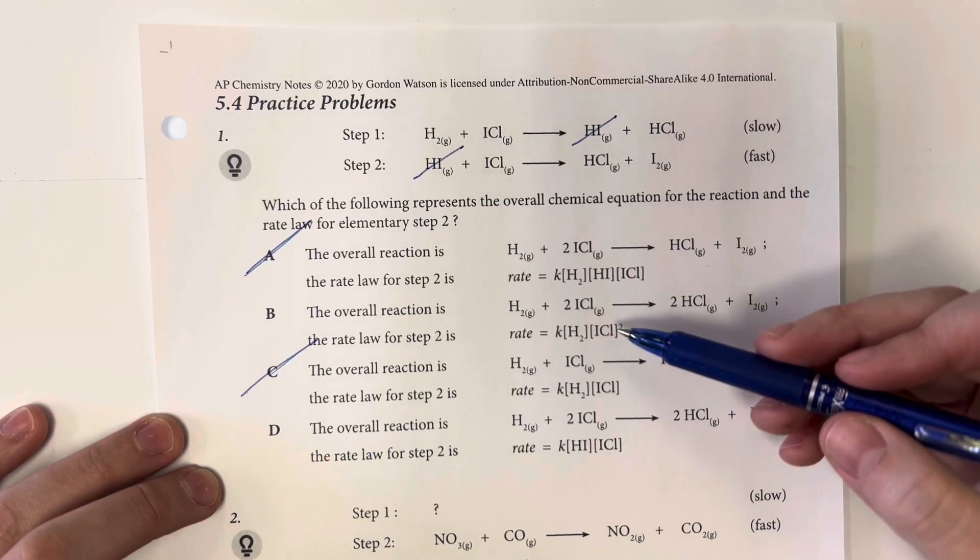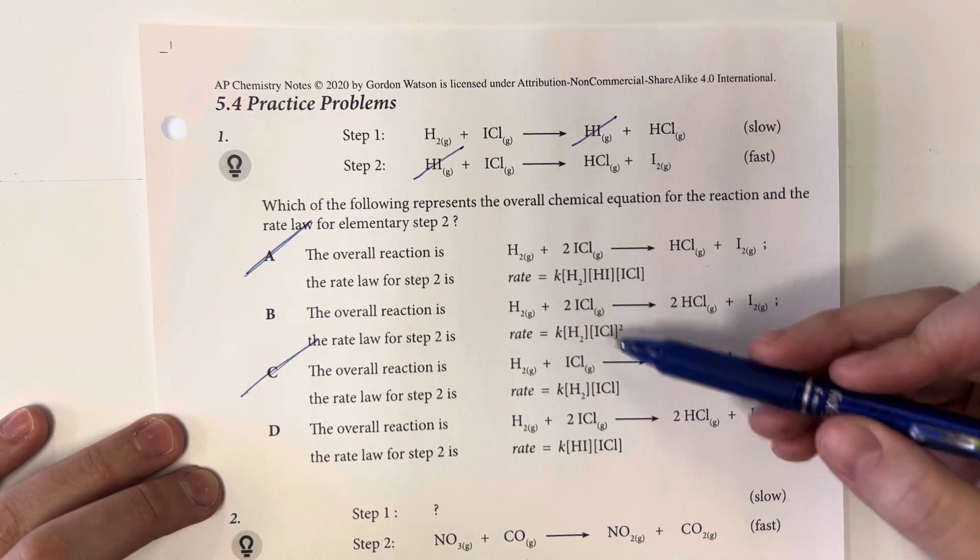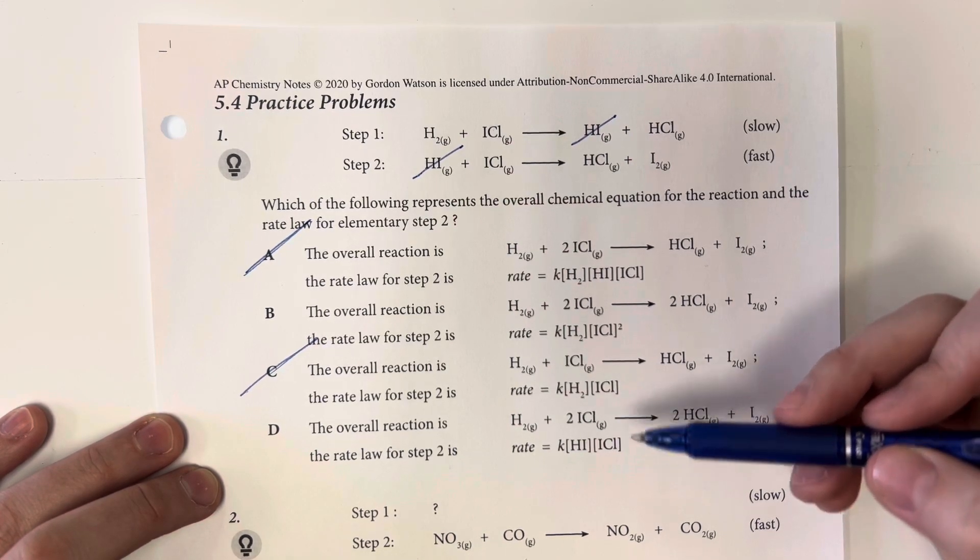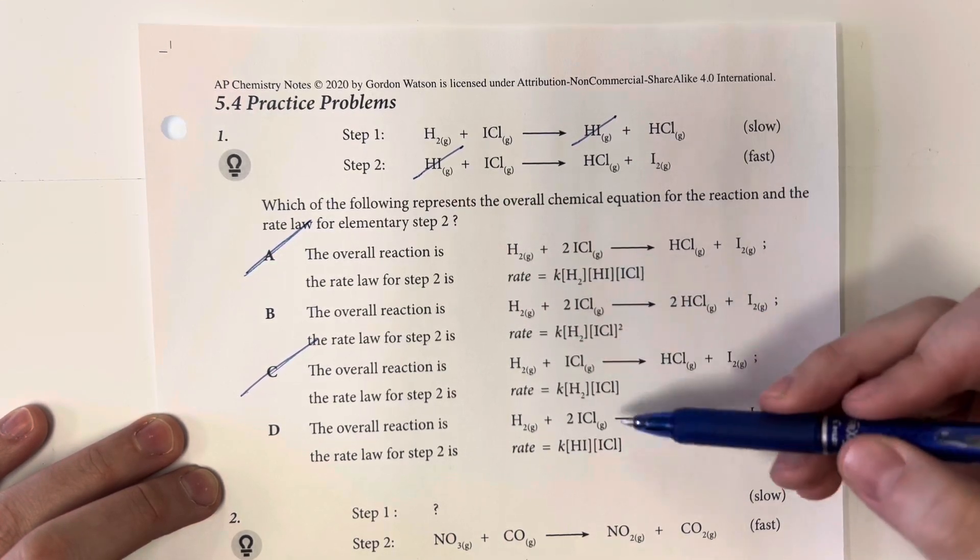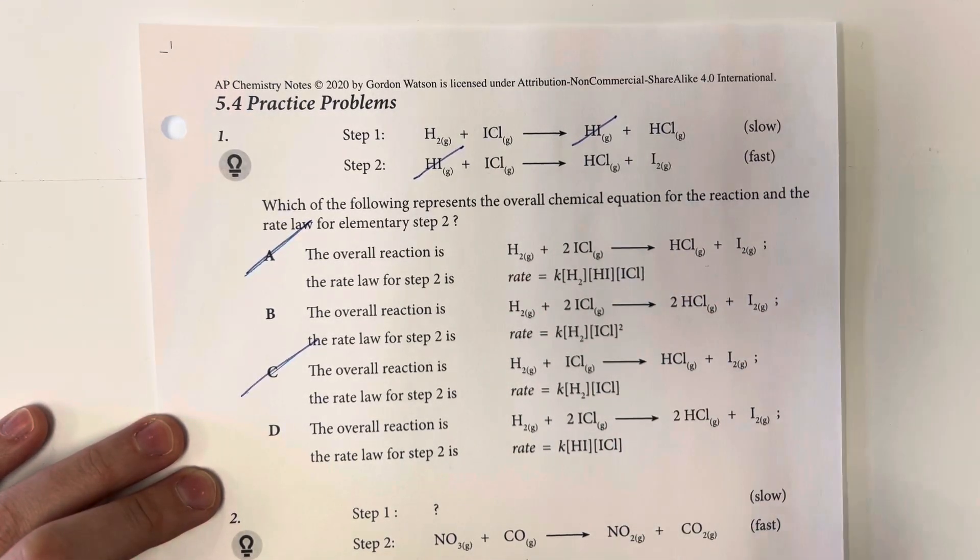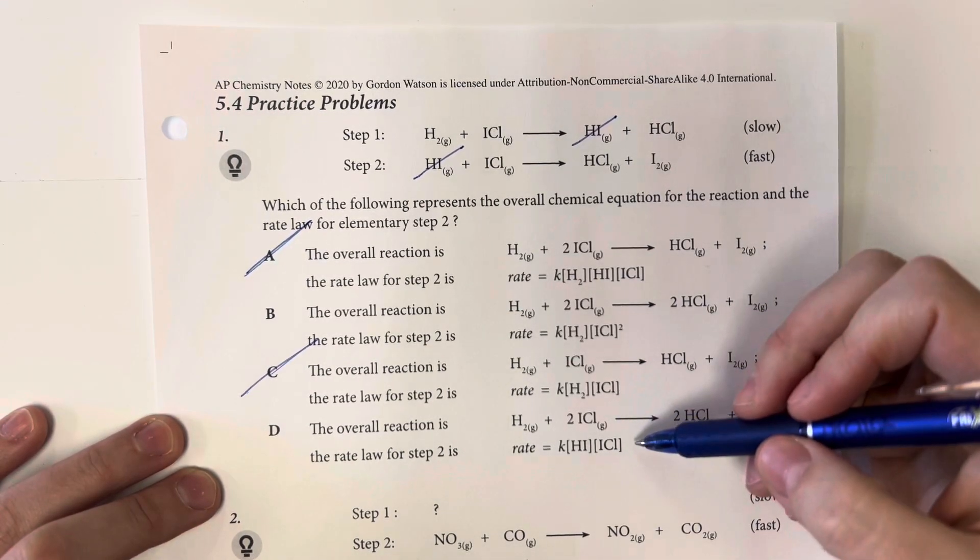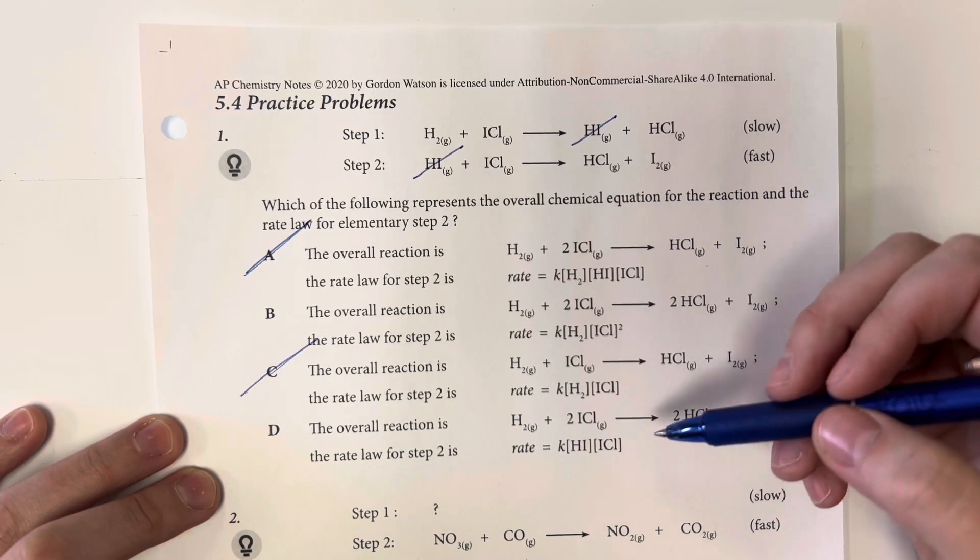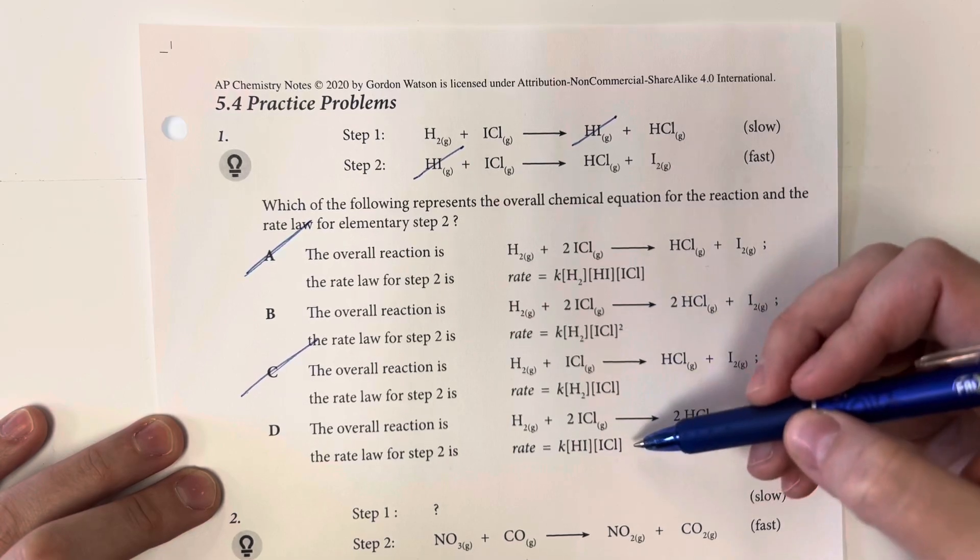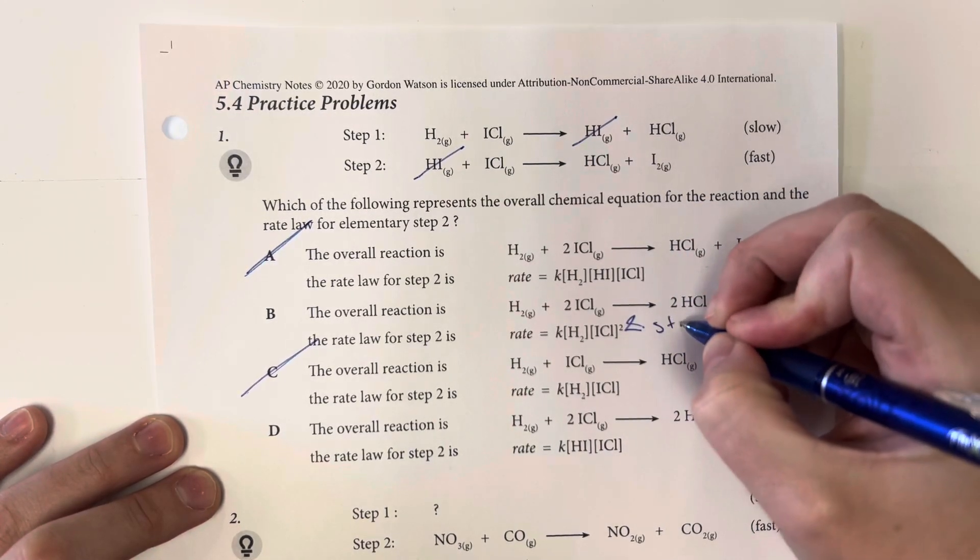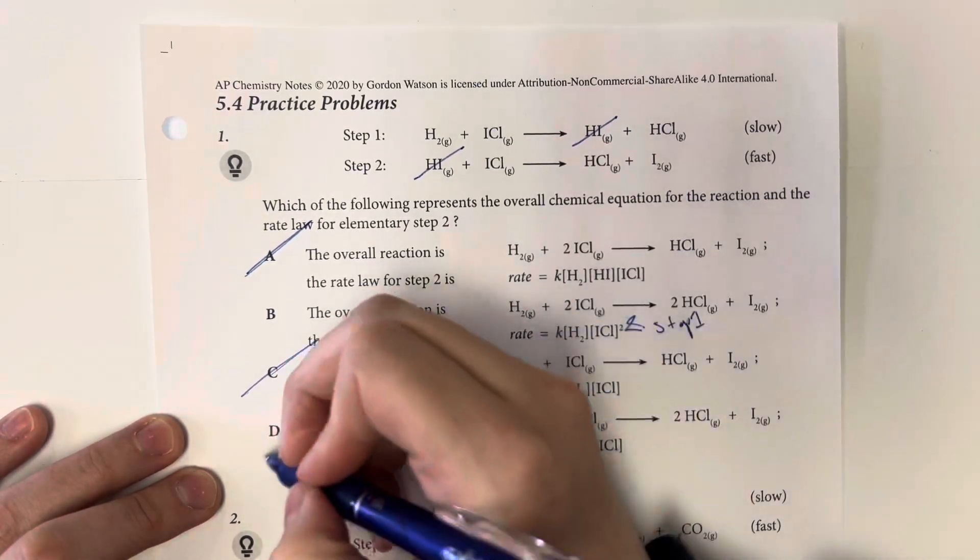And I am left with option choices B and D. So then I am looking for the overall rate law when I am dealing with the reactants for step 2. So this is going to be easily eliminated because this is step 1, but I am looking for step 2.